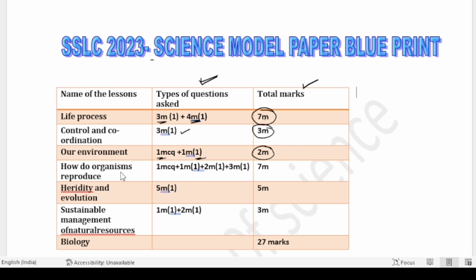Moving to How Do Organisms Reproduce: one MCQ, one one-mark question, one two-mark question, and one three-mark question are given — totally seven marks are allotted to this lesson.